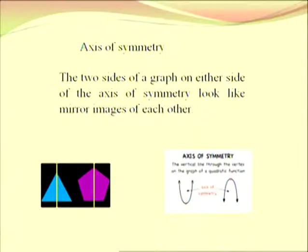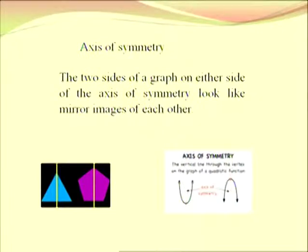We already studied another terminology called the axis of symmetry. This means one axis which divides the figure into two parts such that one part is the mirror image of the other part. If you stand against a mirror and it exactly looks like you, then the figure exactly looks like the other figure — it is called the axis of symmetry. You can see the picture which we already studied.